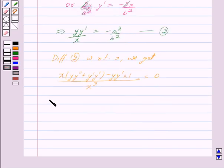This implies, opening the bracket we get x(yy'') + x(y')² - yy' = x² × 0 = 0. As this equation is free from constants a and b, therefore this is the required differential equation.